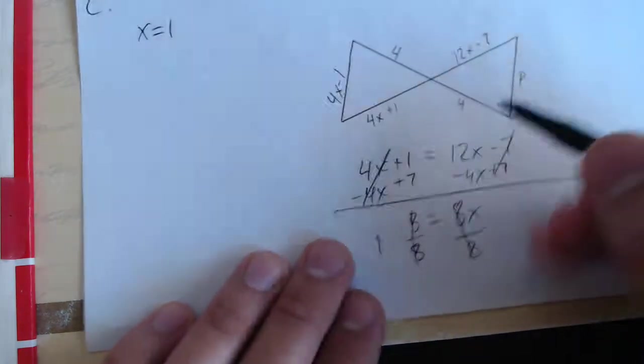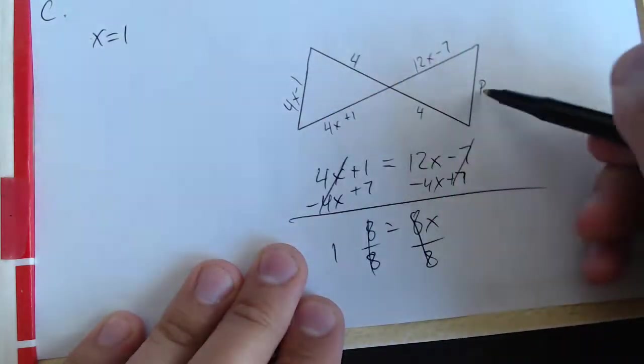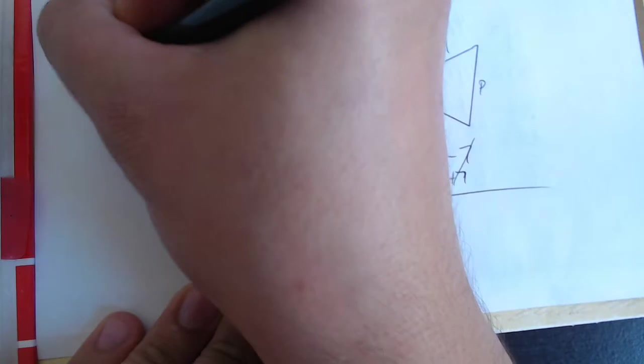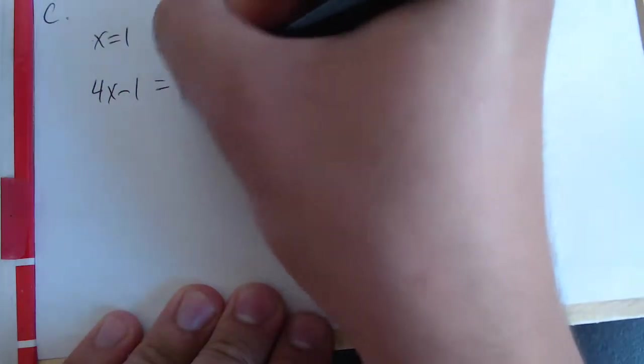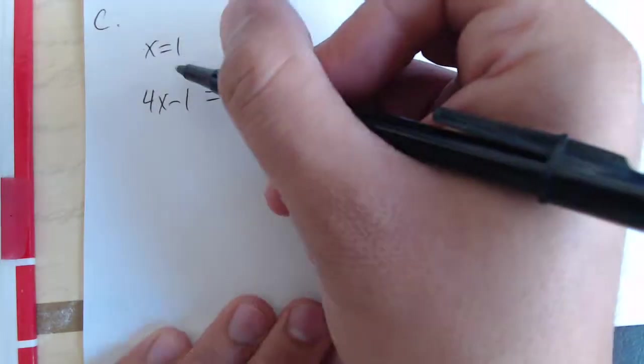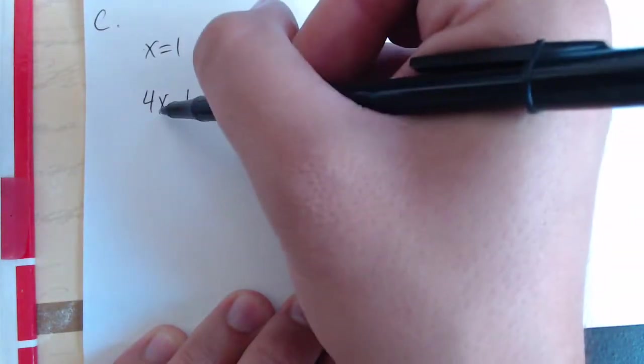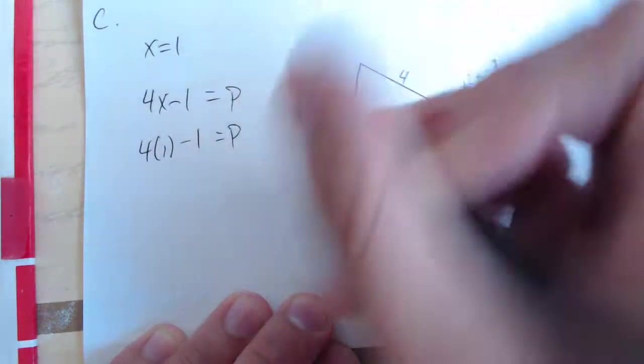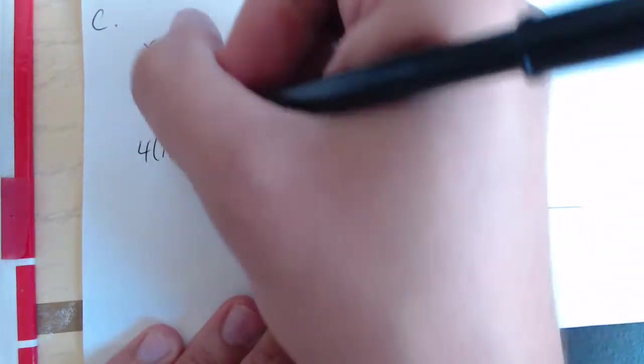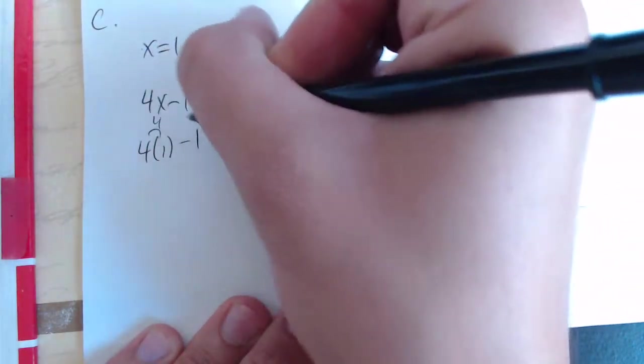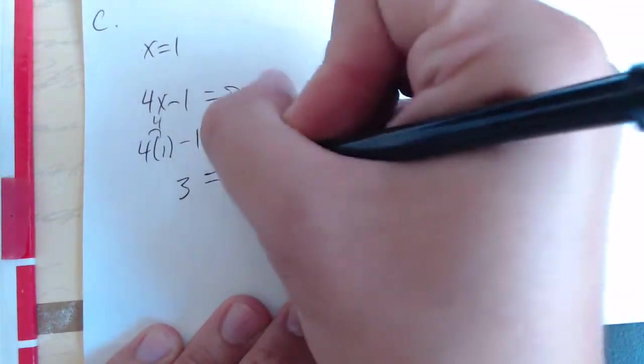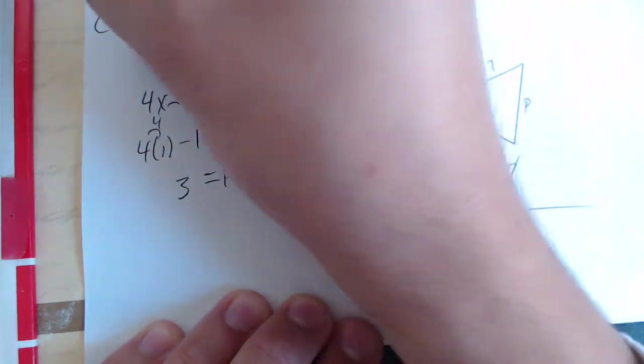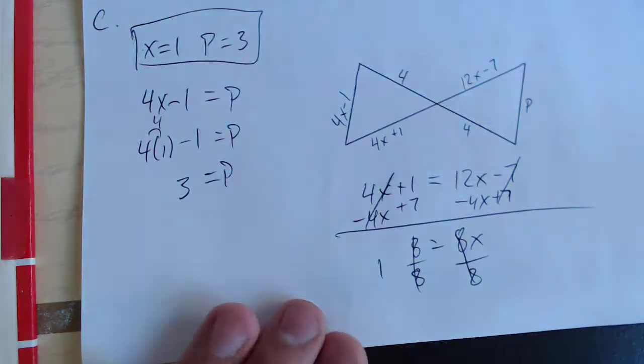Now from here, we can write this side is equal to this side as an equation. So we'll go ahead and do that: 4x minus 1 is equal to p. And the cool thing is we can substitute x into this equation. So we know what x equals, so we'll rewrite that as 4 times 1 minus 1 equals p. Simplify this, and we just get 4 minus 1, which is equal to 3. So p is equal to 3. x equals 1, p equals 3. Those are our answers, and we can call it a day.